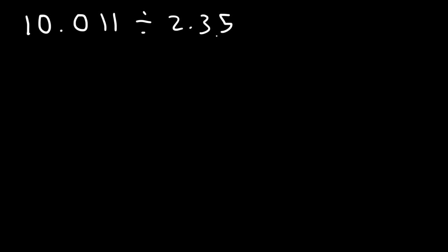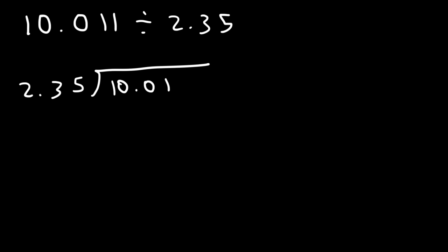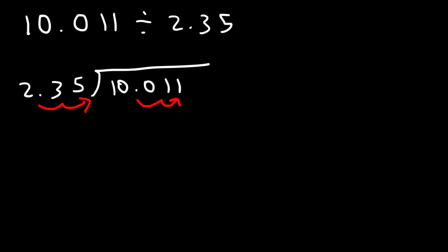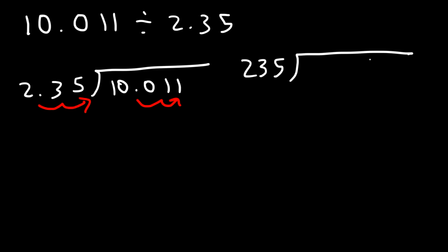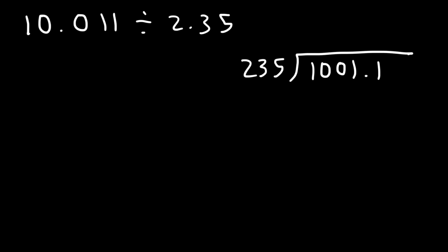Now let's try a harder problem: 10.011 divided by 2.35. This time we need to move the decimal point two places to the right to make the divisor a whole number. So this becomes 235 on the outside and 1001.1 on the inside. Let's make a list.